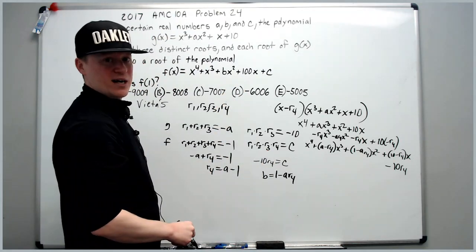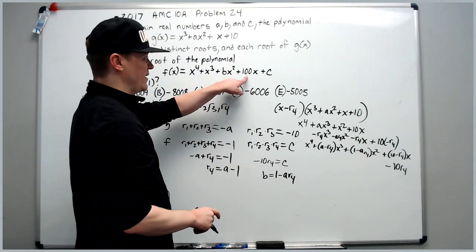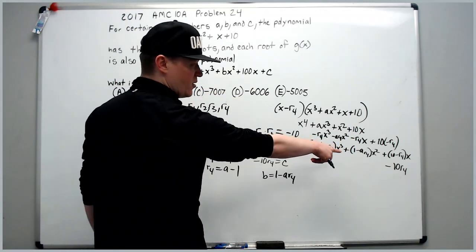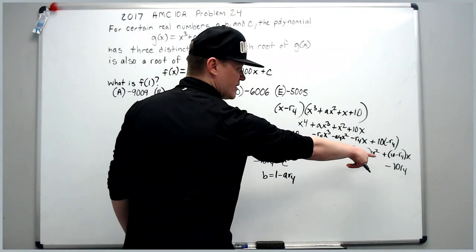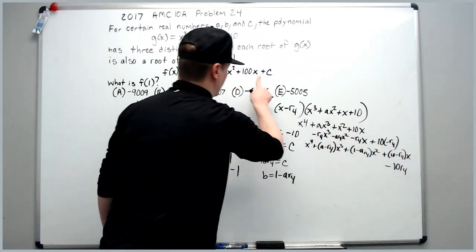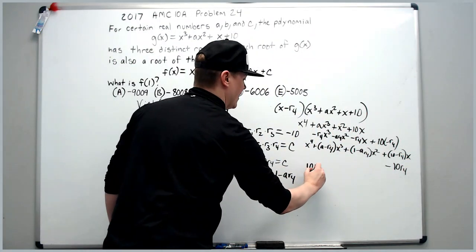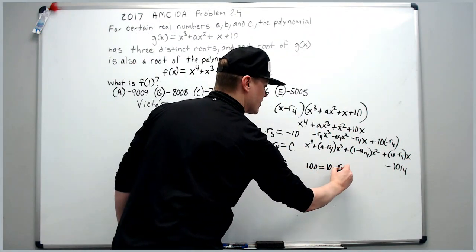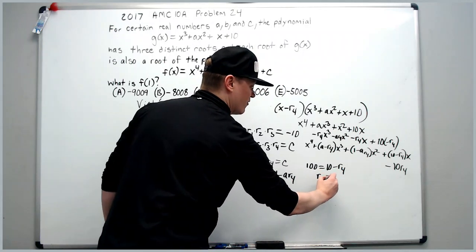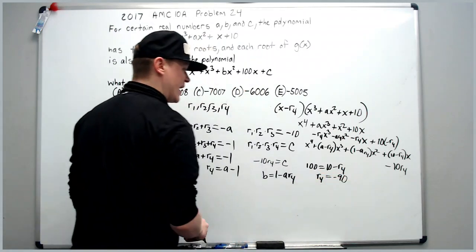This is where the problem breaks open. This is what we were trying to get to. A hundred is equal to 10 minus r4. The x matches the x, so the hundred has to equal 10 minus r4. That means r4 is equal to negative 90.